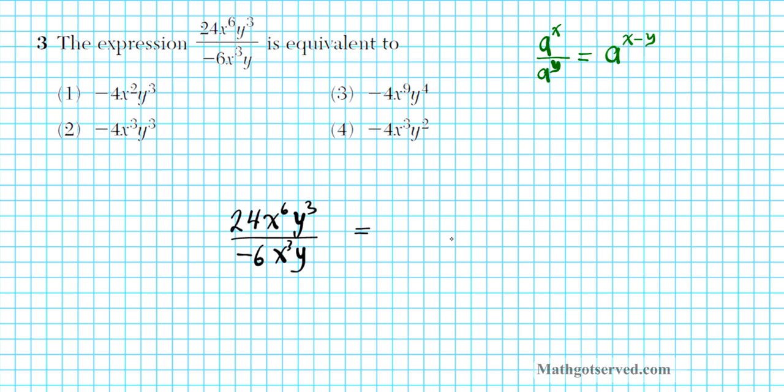In this case here, we have 24x to the 6th y to the 3rd divided by negative 6x to the 3rd y. So first thing we'll do is divide the numbers. What is 24 divided by negative 6? Anytime you're dividing different signs, you always end up with minus. And when you're dividing the same signs, you always end up with plus. So dividing the same signs yields a positive sign. But minus divided by plus is negative. And plus divided by minus is minus also. Now, 24 is positive. What is positive 24 divided by negative 6? You get negative 4 because you're dividing plus by minus.